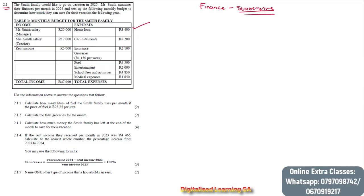We'll start with question 2.1. We are told that the Smith family would like to go on vacation in 2025, and Mr. Smith examines their finances per month in 2024 and sets up a monthly budget to determine how much they can save for their vacation the following year. We are given table one, which is the monthly budget for the Smith family.